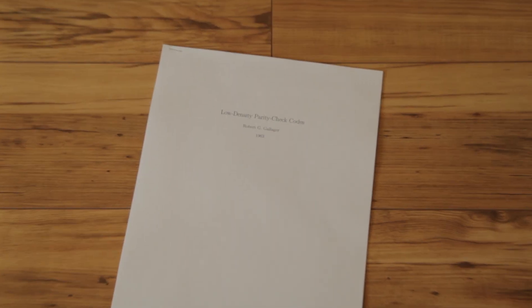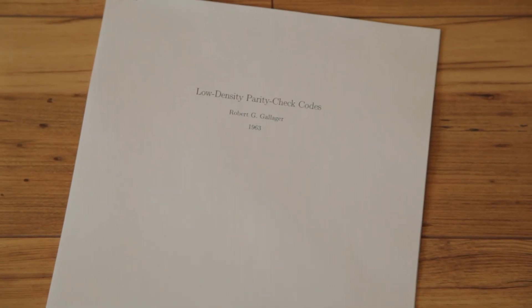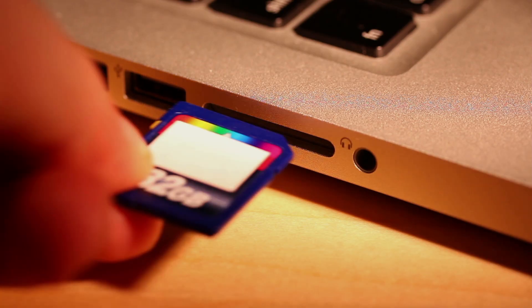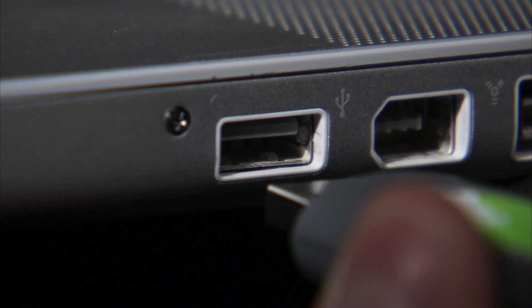In 1960, a doctoral thesis by Robert Gallagher discovered a new approach to the communication coding problem which is in wide use today, particularly in cellular networks and data storage applications. Gallagher combined two key insights.